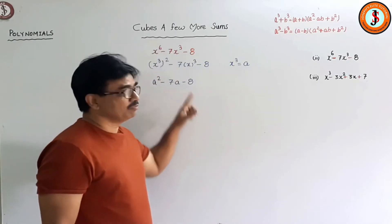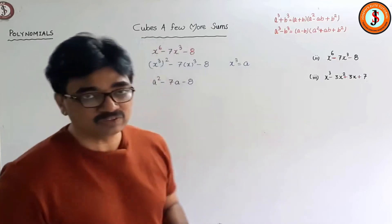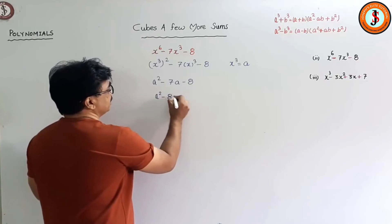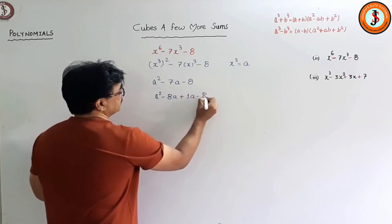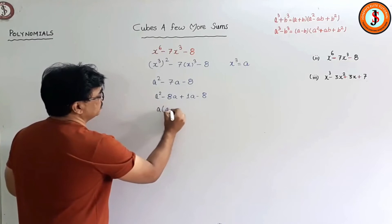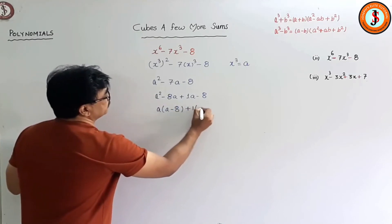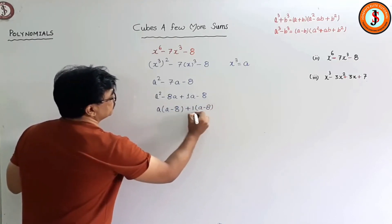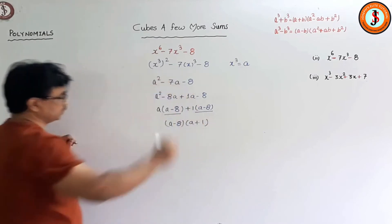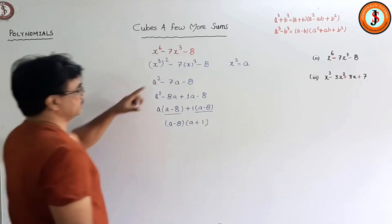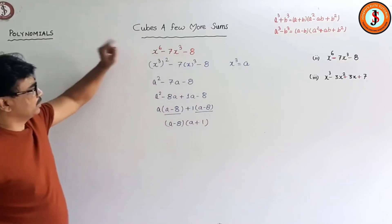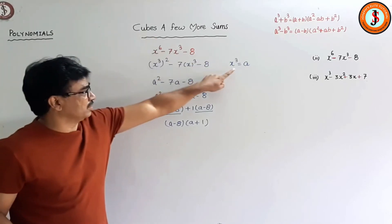This gets us back to the basics of factorization — splitting the middle term. What two numbers when multiplied give -8 and when we find the difference give 7? That's -8 and +1. So I can write a² - 8a + a - 8, taking common: a(a - 8) + 1(a - 8), giving us (a - 8)(a + 1).